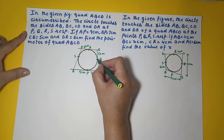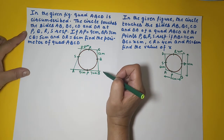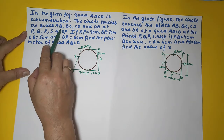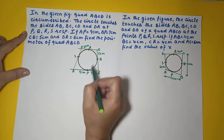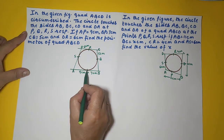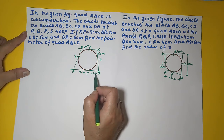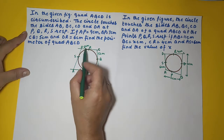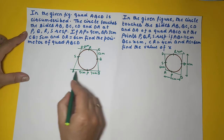The points of contact are P, Q, R, and S. The circle touches the sides AB, BC, CD, and DA at P, Q, R, S respectively, so those become the points of contact. We are told that AP is 9, PB is 7, CQ is 5, and DR is 6. Find the perimeter of quadrilateral ABCD.